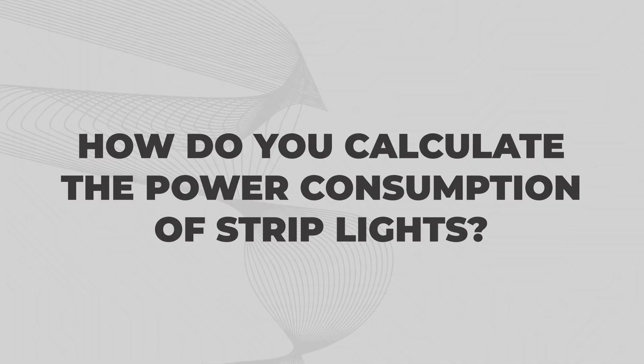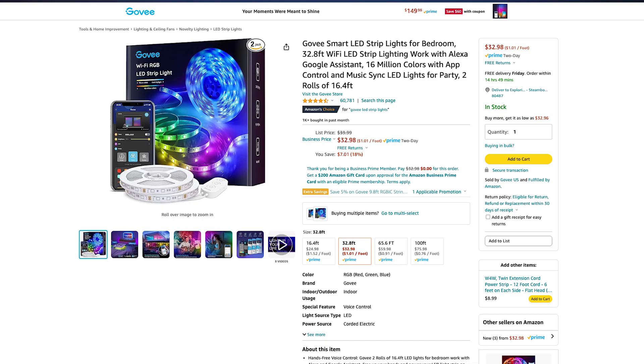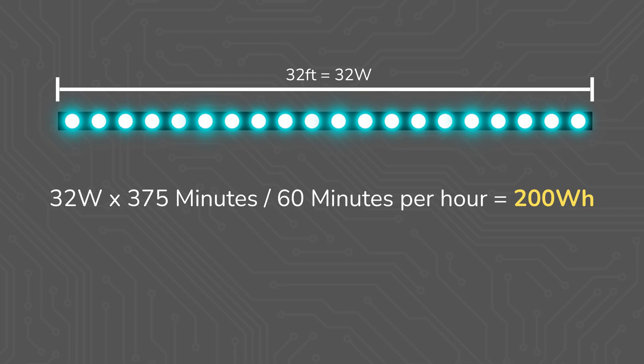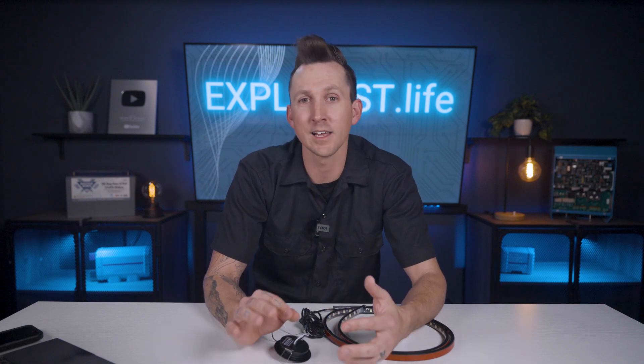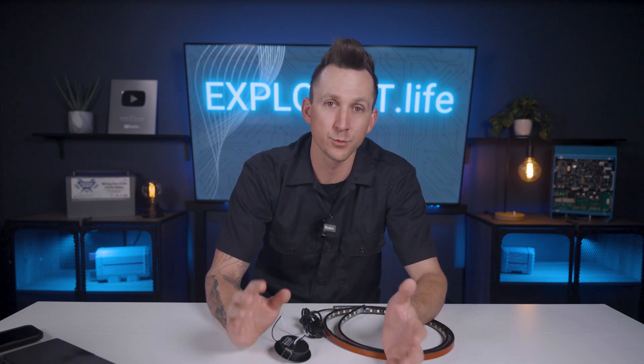How do you calculate the power consumption of strip lights? Calculating the power consumption of LED strip lights is pretty similar to how we calculated the puck lights consumption. An entire 32-foot roll of these Govee strip lights operates at 32 watts, so you could sub that into the equation from earlier, which would give you 200 watt hours used. Now these strip lights are trimmable, which means that if you're running these around the base of a cabinet or something like that and will not be using the full roll, your lighting wattage will be lower.